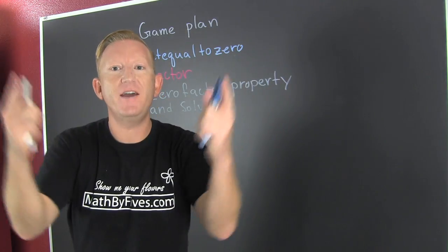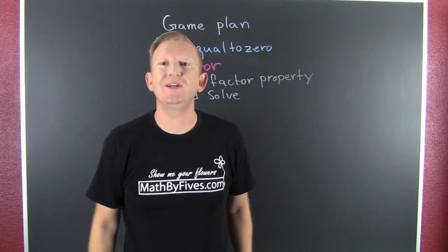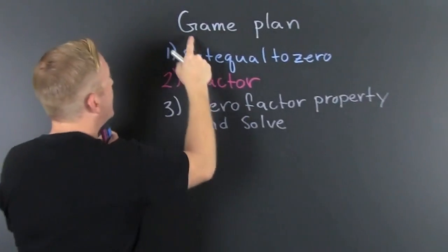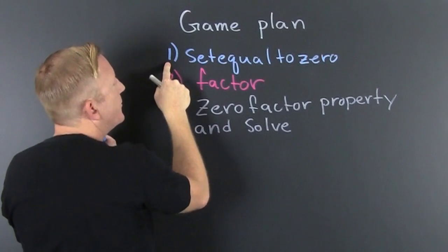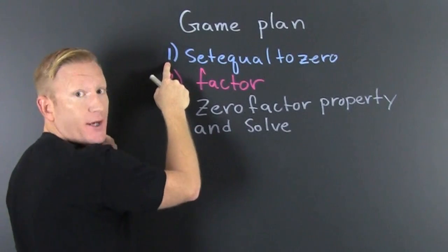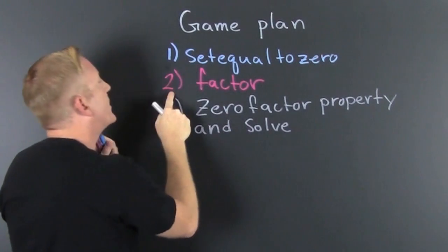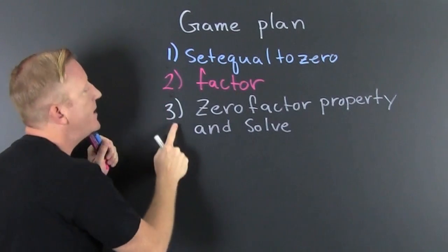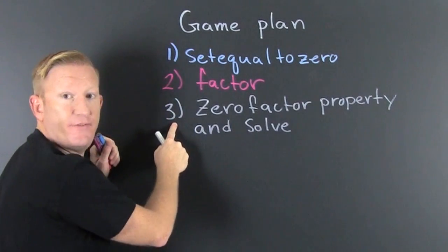Solving quadratics by factoring, but first we need a game plan. First we're going to set it equal to zero, the quadratic. Then we're going to factor, and then use the zero factor property and solve.